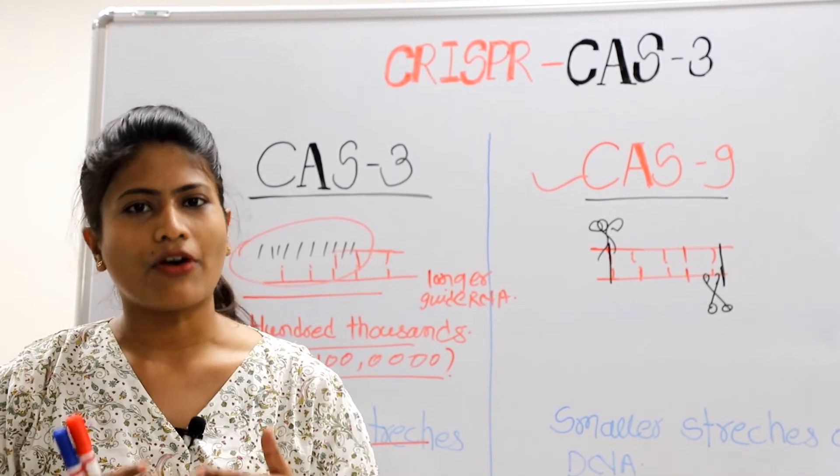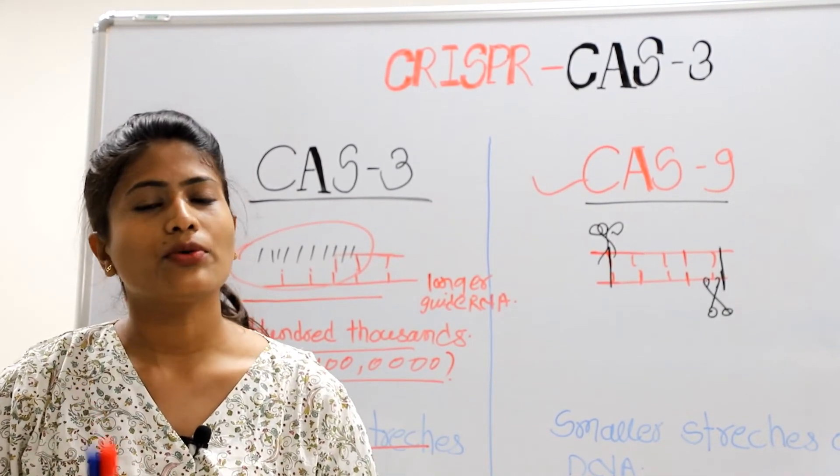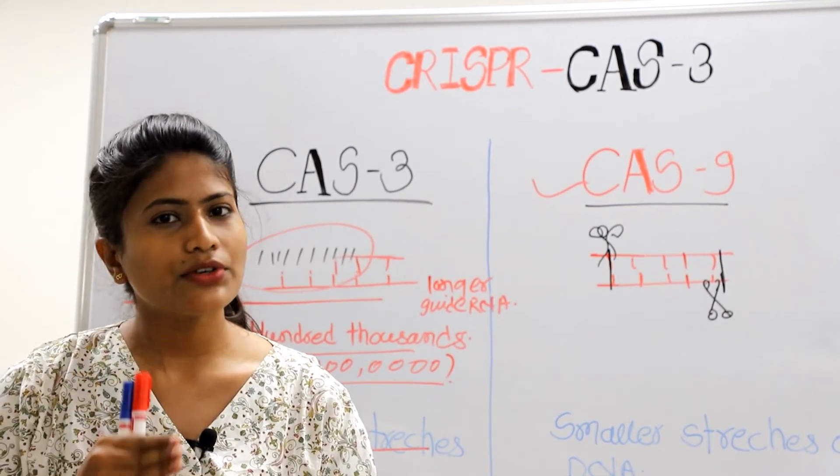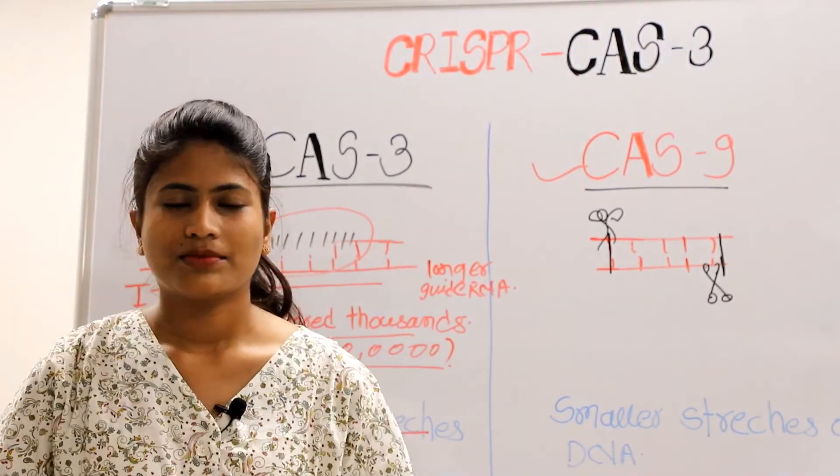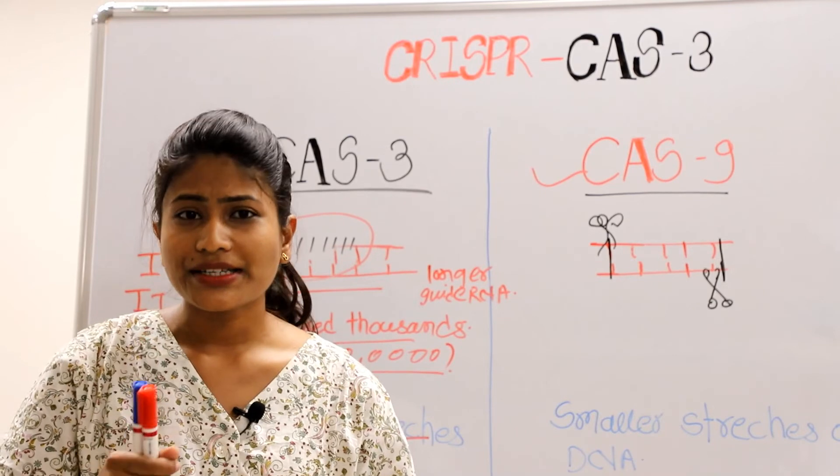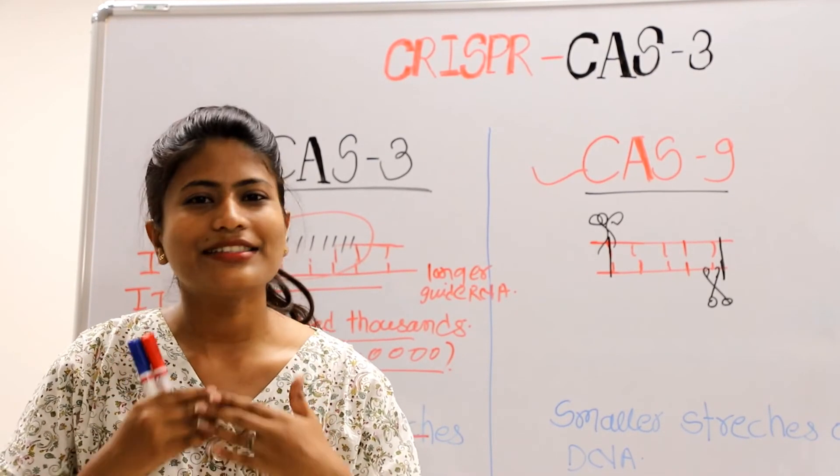Since we are not entirely sure of the complete function of our genes, we have to make sure the section we are deleting is safe to delete, or we have a healthier version to replace it. Hence, we need a backup plan, and there are various studies coming out about the unexpected effects of CRISPR-Cas system.